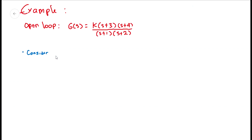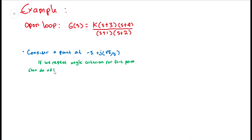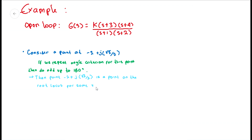Let us see another example. Consider the arbitrary point minus 2 plus j times the square root of 2 divided by 2. If we repeat the previous steps and calculate the angle criterion for this point, the angles of the system add up to 180 degrees. From this result, we know that the point minus 2 plus j√(2)/2 is definitely a point on the root locus for a certain value of gain, because it satisfies the angle criterion.